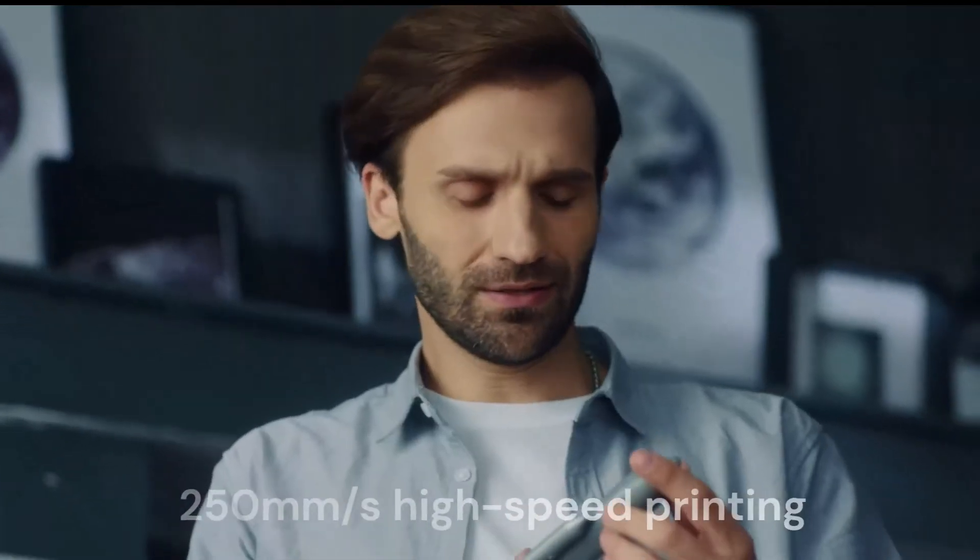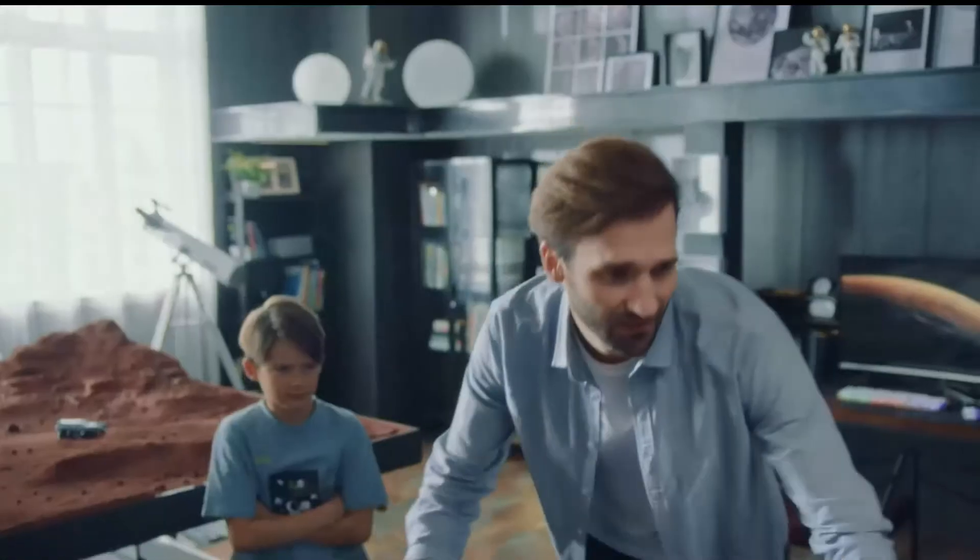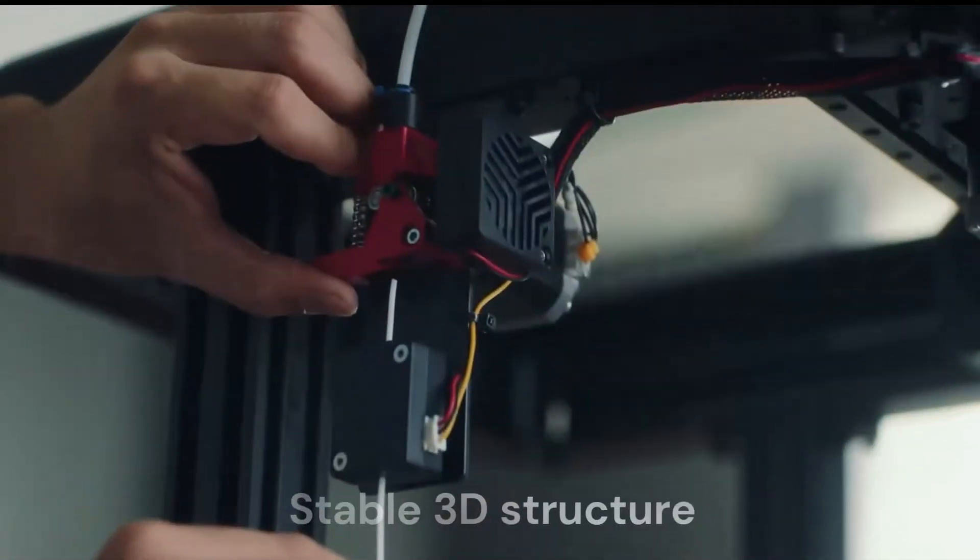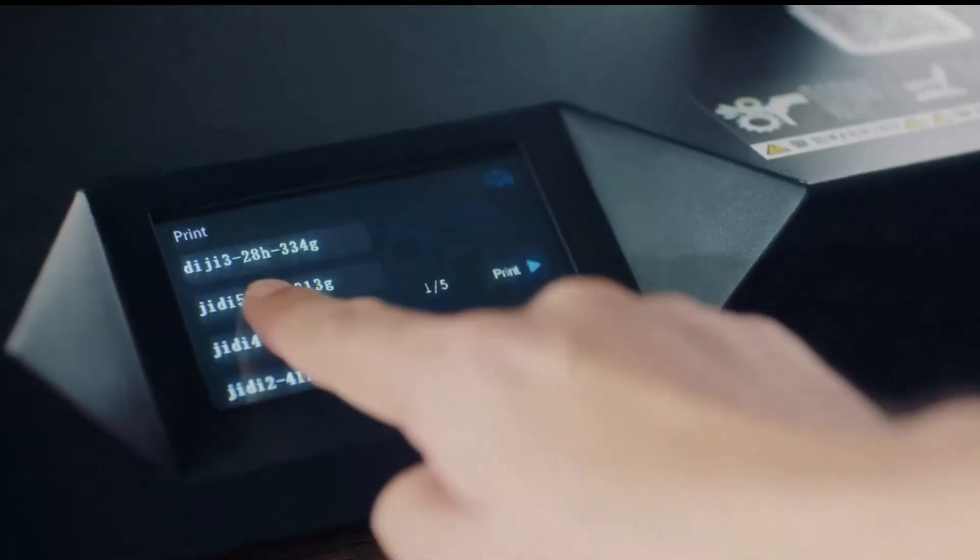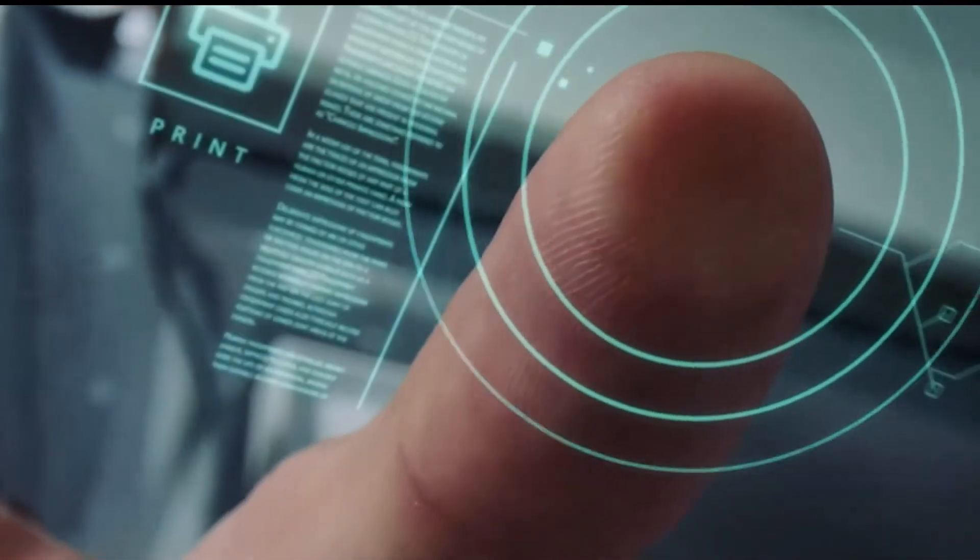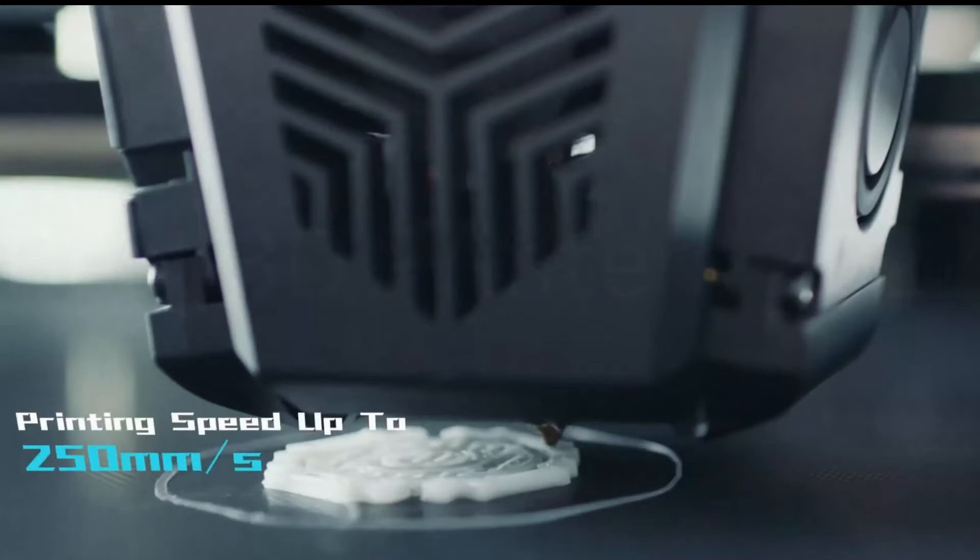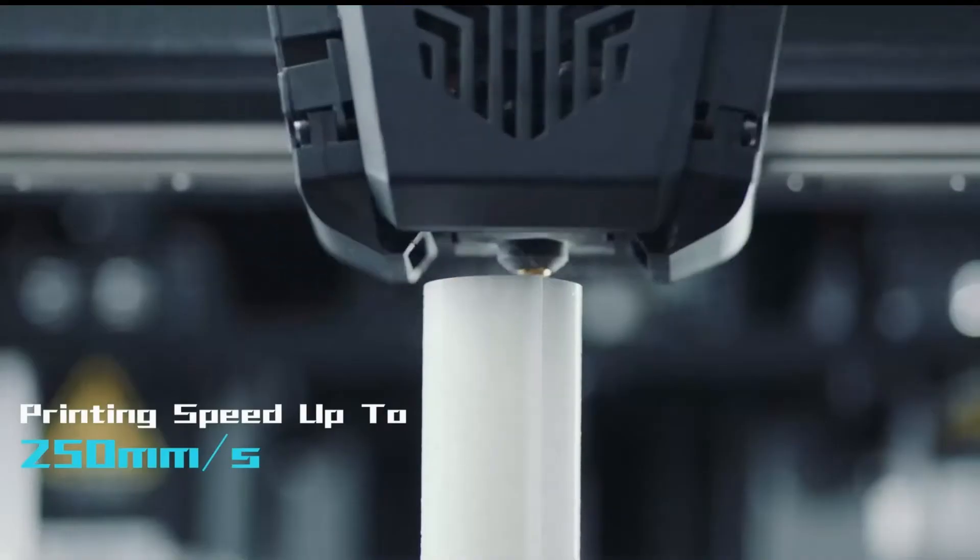250mm/s high-speed printing, the Creality Ender 7 3D printer has a stable 3D structure, and a stronger and stable frame improves the accuracy of large and small printing. Let the printer increase the speed to 250mm per second, while ensuring the printing quality and efficiency.